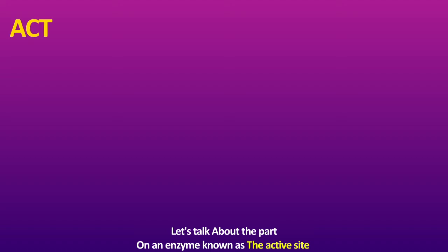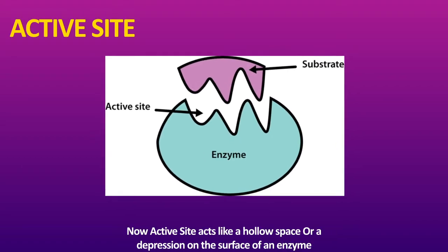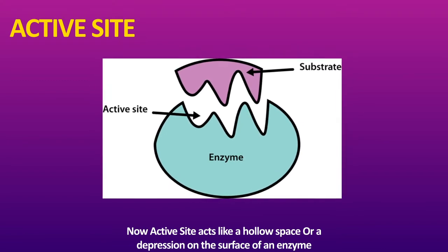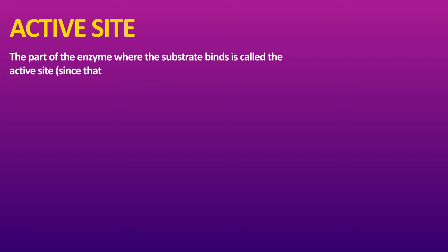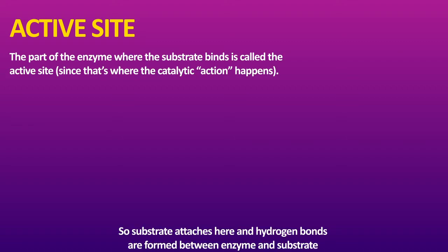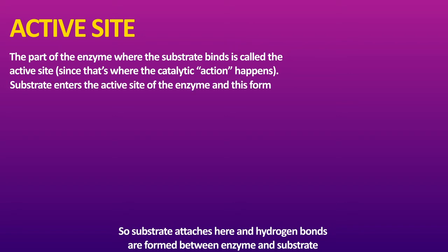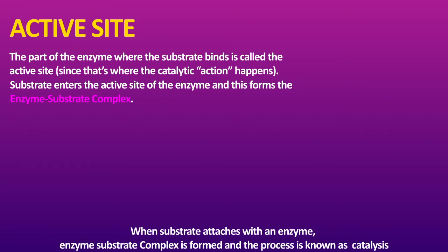Now let's talk about the active site. The active site is like a hollow space or a depression on the surface of the enzyme — the part where the substrate binds. When the substrate attaches to the active site, the part is called the enzyme-substrate complex, and the process happening here is known as catalysis.